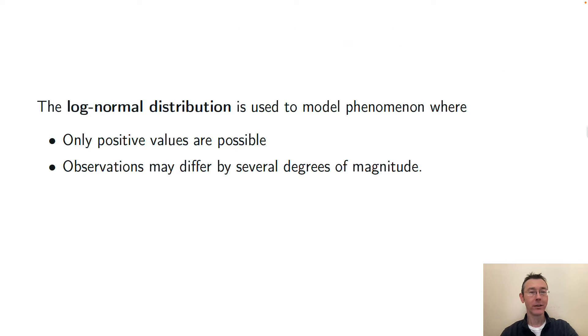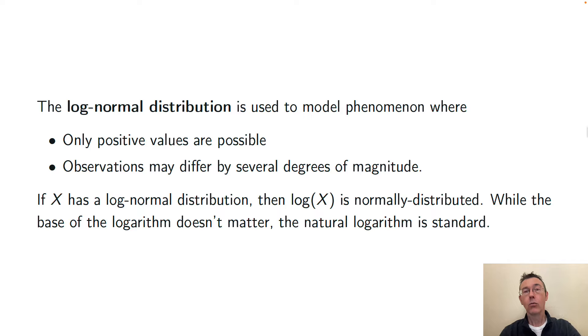This is a really common and important distribution used to model phenomena where only positive values are possible and observations can and do differ by several degrees of magnitude. Basically what's going on here is that if your random variable has a log-normal distribution, then its log has a normal distribution.